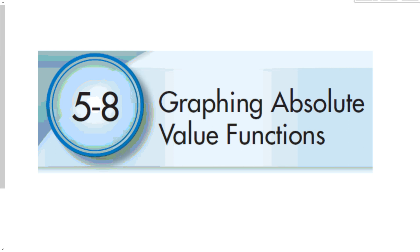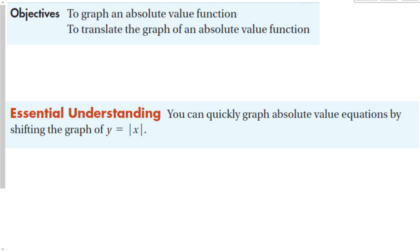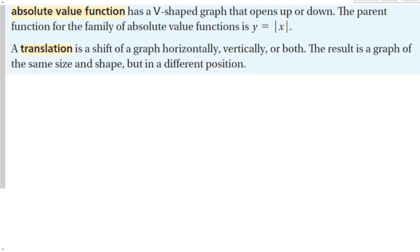5-8: graphing absolute value functions. Our objective is to graph an absolute value function and to translate the graph of an absolute value function. We can quickly graph absolute value equations by shifting the graph of y equals the absolute value of x. An absolute value function has a V-shaped graph that opens up or down. The parent function for the family of absolute value functions is y equals the absolute value of x. A translation is a shift of the graph horizontally, vertically, or both, resulting in a graph of the same size and shape but in a different position.